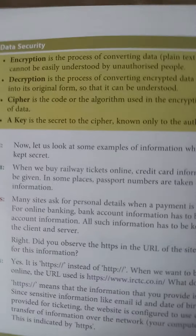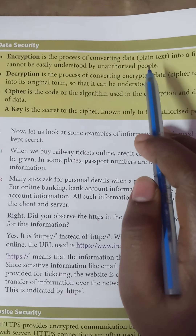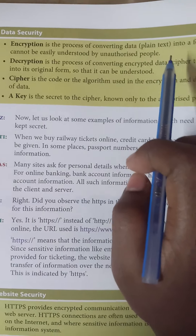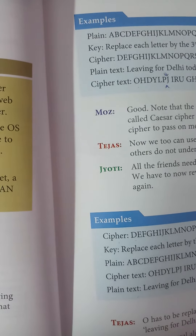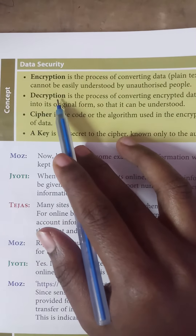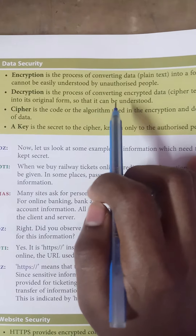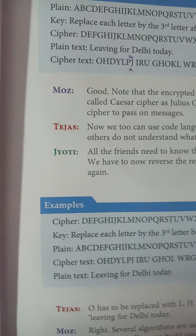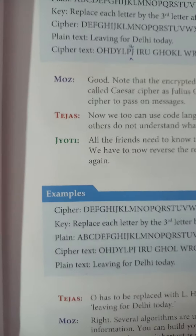Note that the encrypted text is also called cipher text. This code is also called the Caesar cipher or Julius Caesar cipher, because he was the first person to use a cipher to pass on messages. We too can use code language among our group of friends so that others do not understand what we are saying. All friends need to know the cipher code to understand the messages.